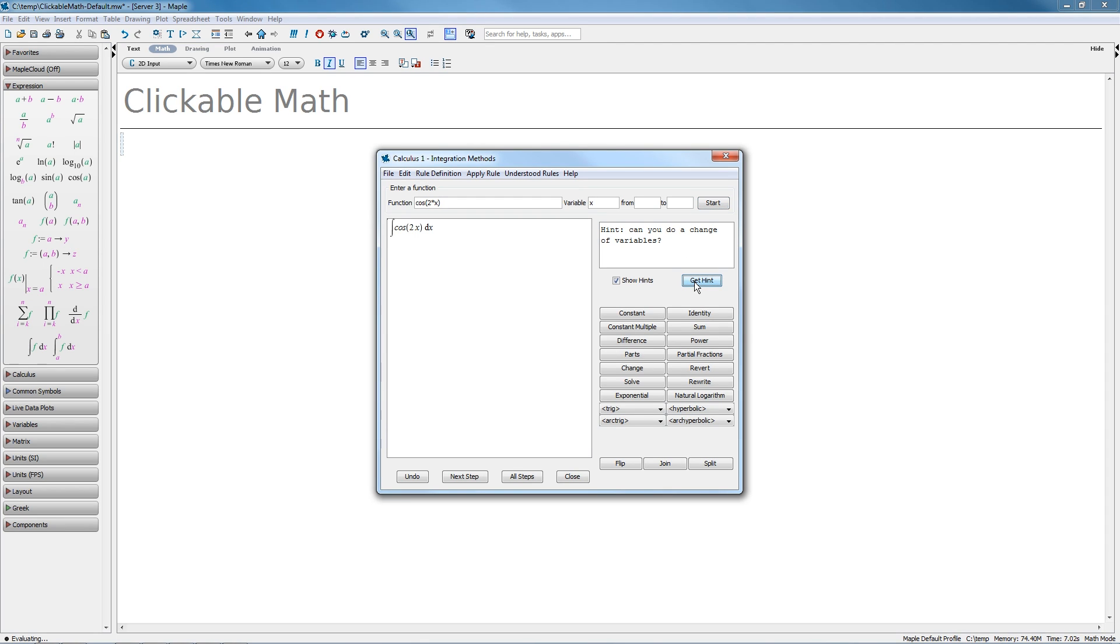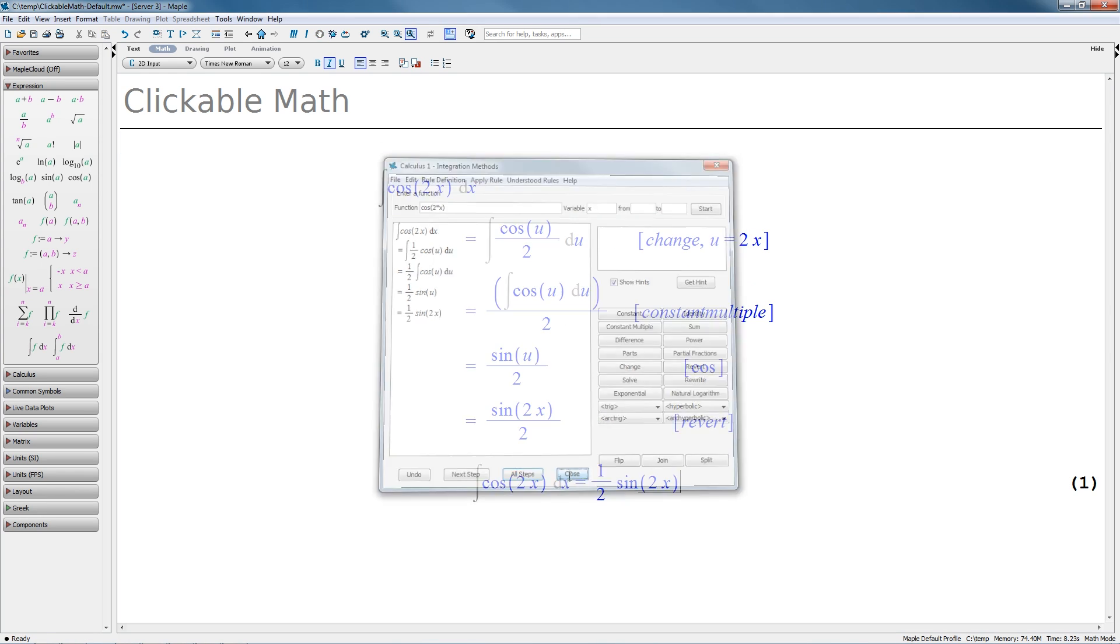They can perform steps themselves, such as performing the change of a variable, or they can ask Maple for hints and have Maple perform the next step for them, or they can request the full solution.